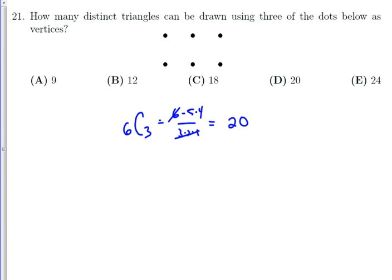However, if you pick these three or these three, then it is not a triangle. It's a straight line. So we have to subtract away two of our triangles, and we end up with a correct answer of 18.